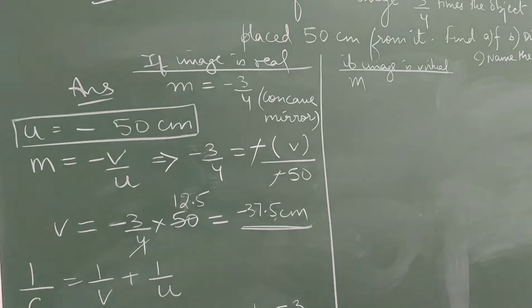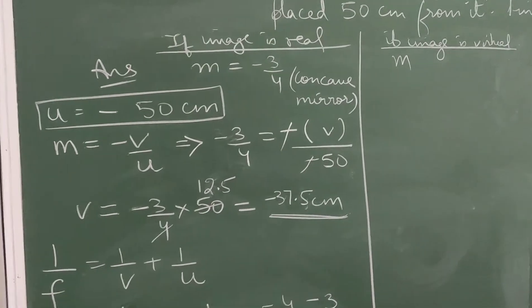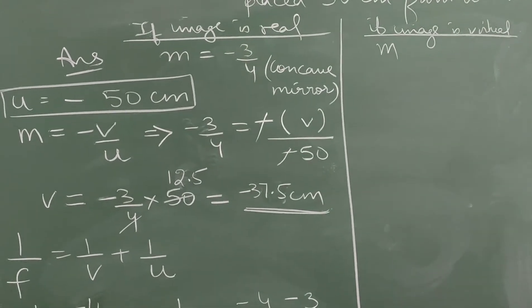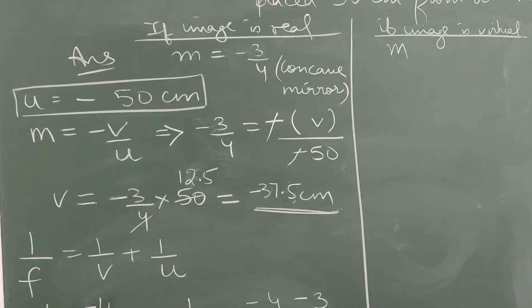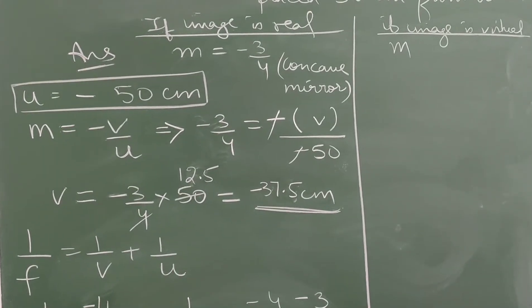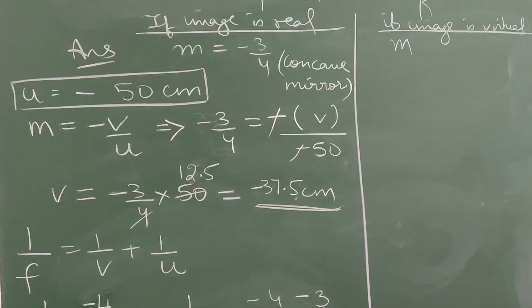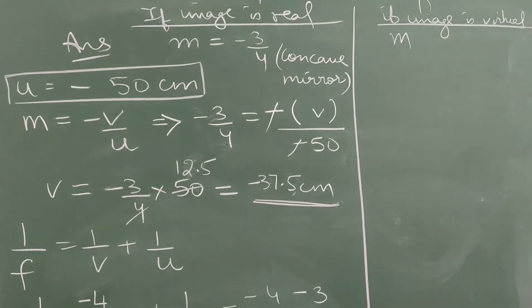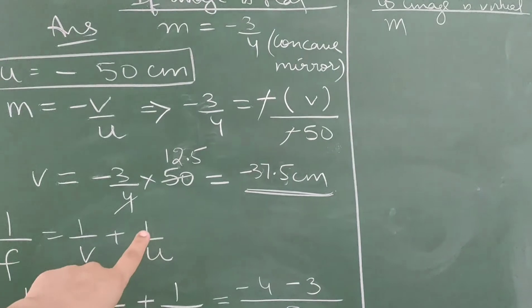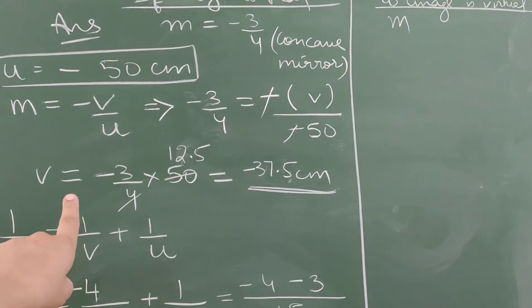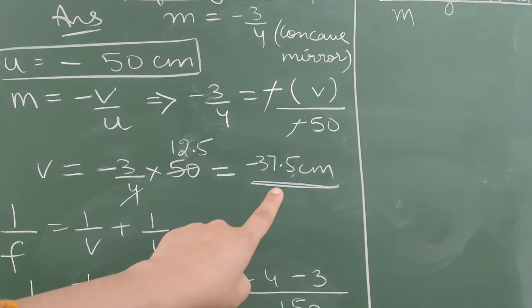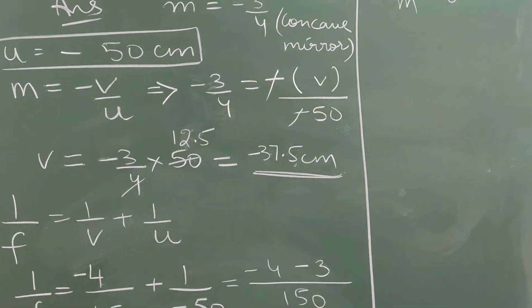Taking m as minus 3/4 (assuming real image), u is given as minus 50 in the question. Substituting into the magnification formula, we calculate the image distance v, which comes out to be minus 37.5 centimeters.